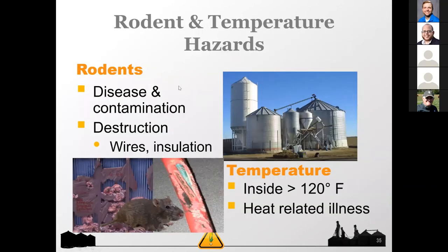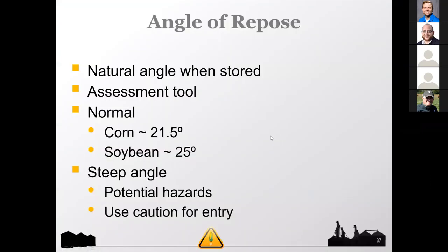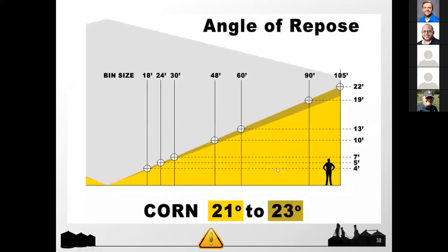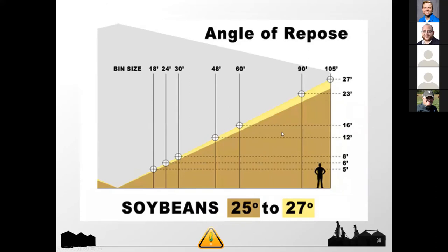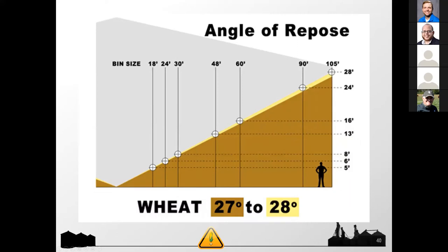Rodents can spread contamination diseases, cause grain quality issues, and ruin your wiring. What's critical when you want to go into a grain bin is check the angle of repose — for corn, normally about 21 to 23 degrees; for soybeans, 25 to 27; for wheat, 27 to 28. If it's steeper, that's when you know there's some sort of hazard — the grain has not been dried correctly. If you see mold or high temperatures, leaks in the bin, or the angle of repose doesn't match those ranges or shows uneven slopes, stay away.